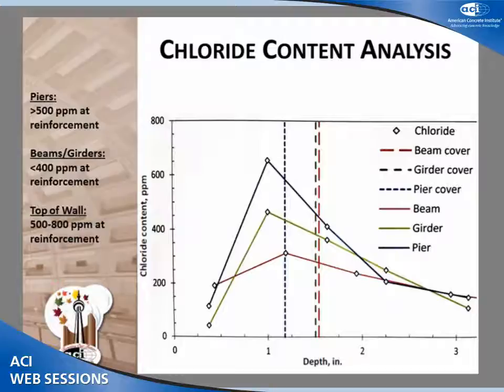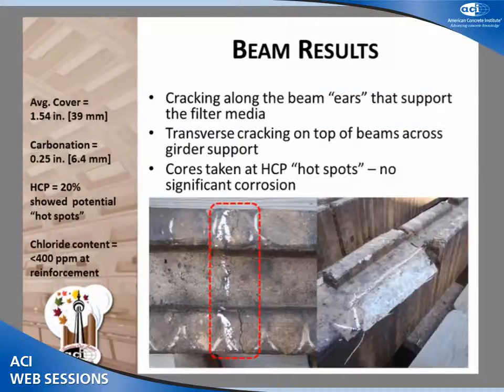The piers showed the highest amount of chlorides and also had the least amount of cover. We were above our threshold at the level of reinforcement for the piers, but below the threshold for both the girders and the beams. The top of the wall had extremely high chlorides — our average near the depth of reinforcement was between 500 and 800 parts per million, with a peak up near 1,000 parts per million. This was because chlorides are absorbed by the concrete and get deposited in higher concentrations as the water evaporates near the top of the wall.